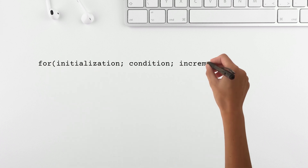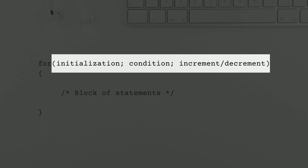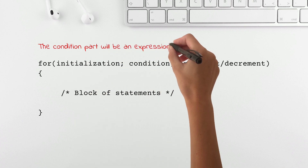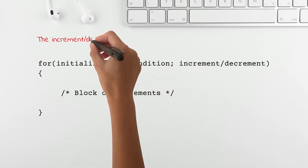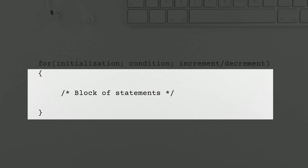Here is the syntax of for loop. The keyword 'for' is used in C. Within round brackets, there are three parts separated by semicolons: initialization, condition, and increment/decrement. The initialization part is used to initialize the variable. The condition part is an expression that evaluates to true or false. The increment/decrement part is used to increase or decrease the value of the initialized variable.